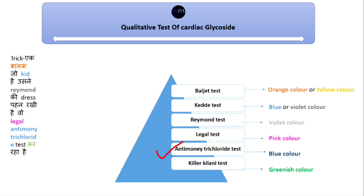The Antimony Trichloride test gives a blue color. For the Keller-Kiliani test, I remember that I had a friend whose name was Jilani, and he mostly wore a greenish color shirt — so the Keller-Kiliani test gives a greenish color. So this is all for today.